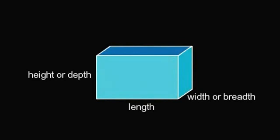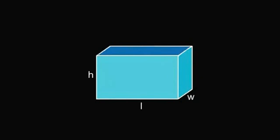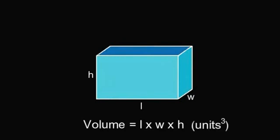Going back to our original cuboid: it has a length, a width or breadth, and a height or depth — represented by L, W, and H. For any cuboid, its volume is given by length multiplied by width multiplied by height, and the units are cubic units. So if the dimensions are in centimetres, the volume is in cubic centimetres; if in inches, cubic inches; if in metres, cubic metres.